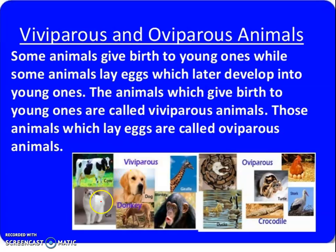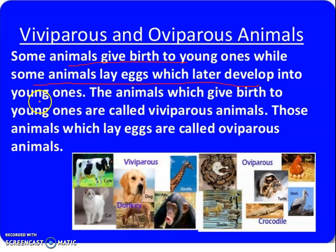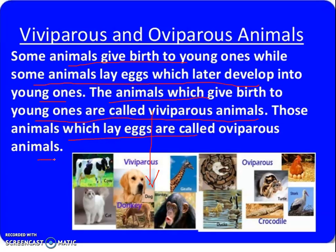Viviparous animals include cow, dog, giraffe, gorilla, monkey, deer, and horse. These animals give birth to young ones directly. Oviparous animals, on the other hand, lay eggs which later develop into young ones. Those animals which give birth to young ones are called viviparous animals, and those which lay eggs are called oviparous animals.